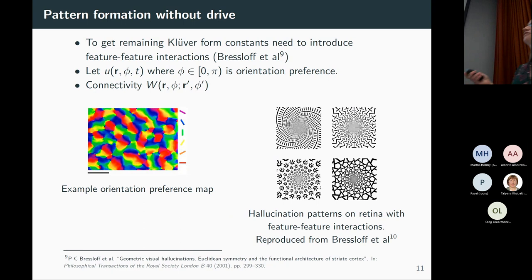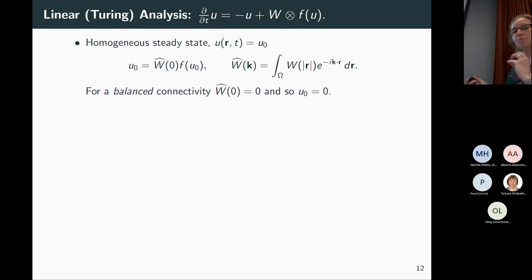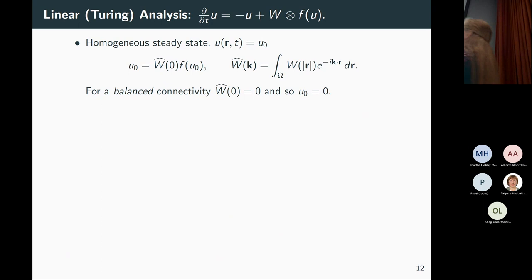If you want to recover all of the hallucination classes — including cobwebby patterns with edge orientation sections — then you need to include more features in your model. Neurons in visual cortex don't just encode a position on the retina; they have some kind of orientation preference built in. They fire preferentially to edges in a certain orientation, and the cortex makes maps of which positions have which orientation preference. Including that in your connectivity function allows recovery of all reported hallucination types.